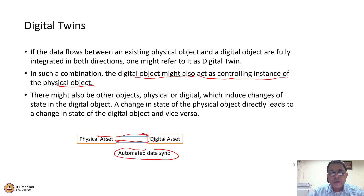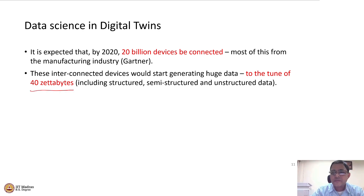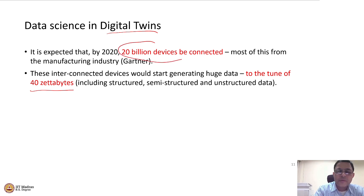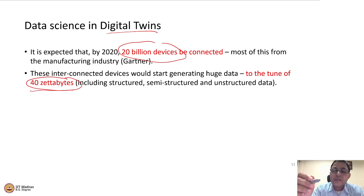What is the data science component in digital twin? It is expected that nearly 20 billion devices are going to be connected, according to Gartner, generating about 40 zettabytes of data — structured, semi-structured, and unstructured. Building these models will become easier with lots of connected devices and lots of data, but sifting through data and picking out what is relevant, what is going to impact my asset, and what the physics model predicts — that is where the intelligence is. All the mathematical models along with the data gives us the key.